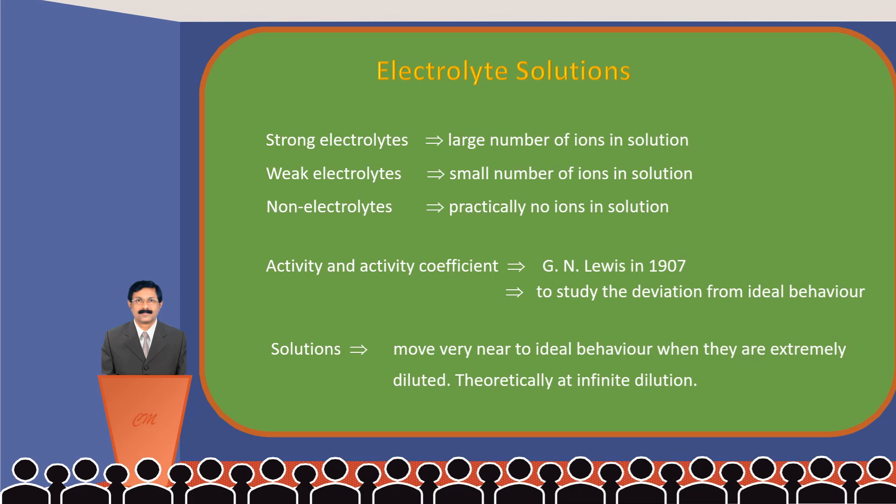The reason for near-ideal behavior at infinite dilution could be explained in the following way. When the solution is very dilute there may not be any electrostatic interaction among the solute molecules or ions. Each solute molecule or ion has its own random movement in the solution. Thus, each species fully participates in exhibiting the bulk behavior of the solution. This we call as the ideal behavior.